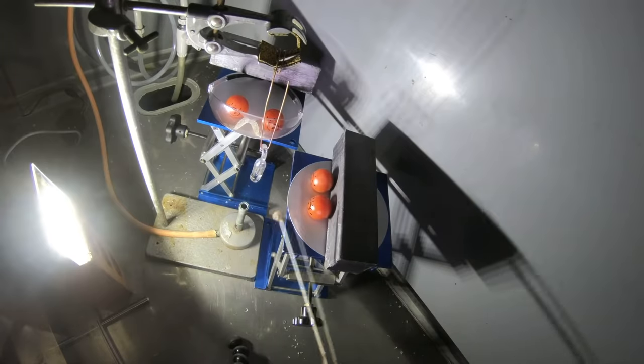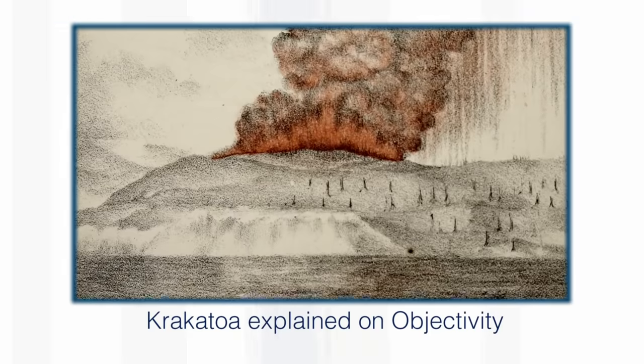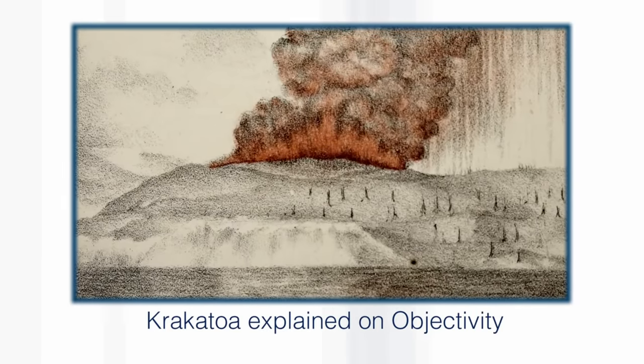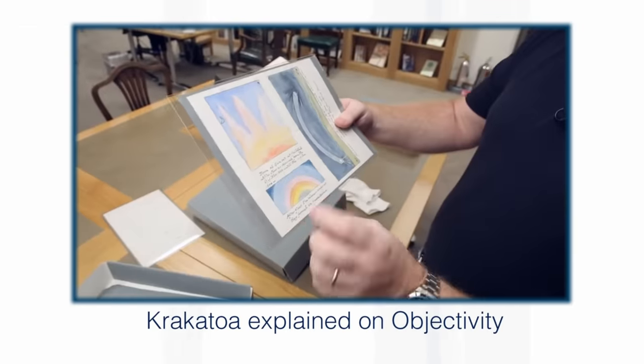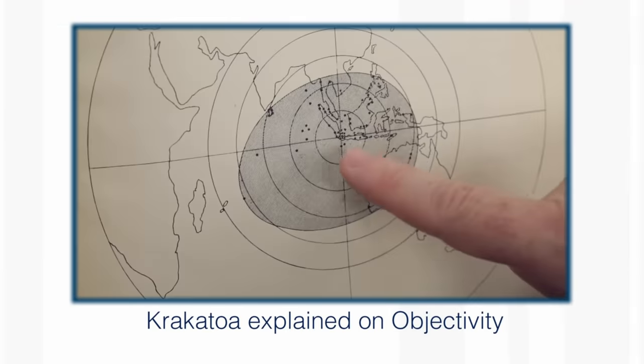When we heat one of these sealed tubes, they're called Krakatoa tubes, after the volcano that exploded catastrophically in the late 19th century.